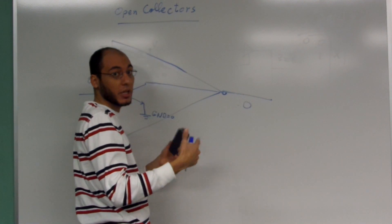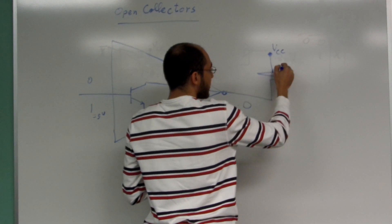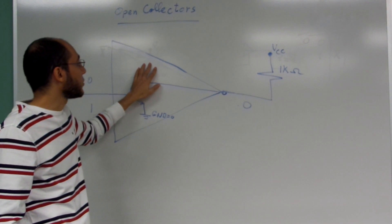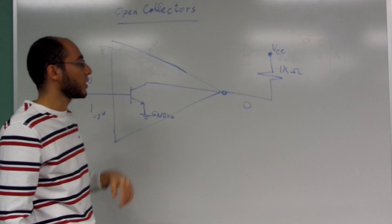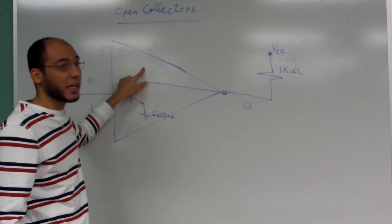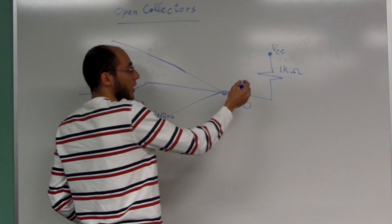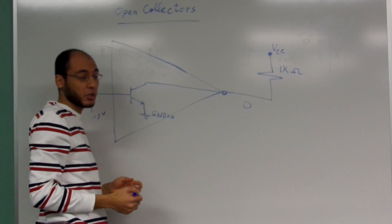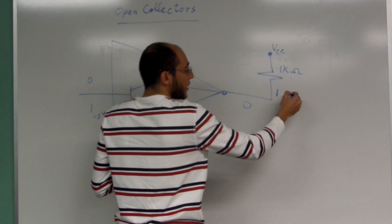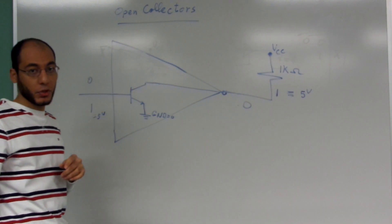This is why, whenever we have an open collector NOT gate, we have to connect from the external side a resistor and then connect it to VCC. This resistor could be around one kilo-ohm, because internally in a non-open-collector NOT gate the resistor was also around one kilo-ohm. So when an open collector NOT gate does not have the resistor and VCC connected internally, we have to connect them externally. With this external connection, if the input is zero, the output is logic one — five volts — coming from VCC.